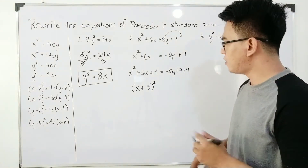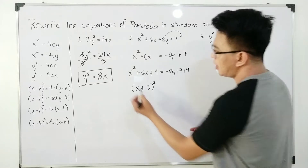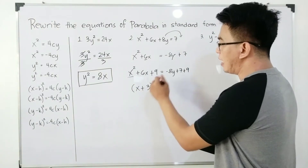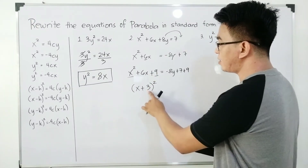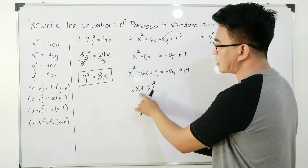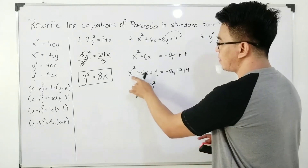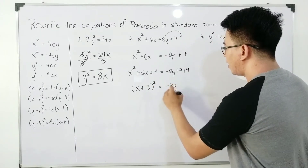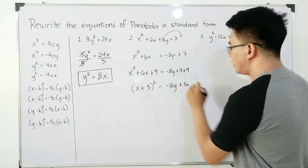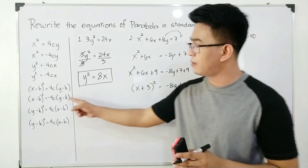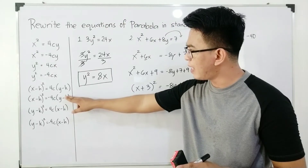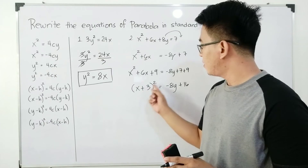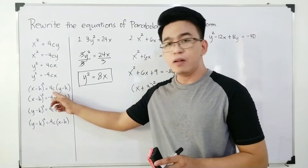So (x + 3)². And as for the right side, we need to simplify. This is -8y + 16. Going back with our pattern, we are done with the left side: (x + 3)². Now we need to factor something on the right side. We need to find the greatest common factor.